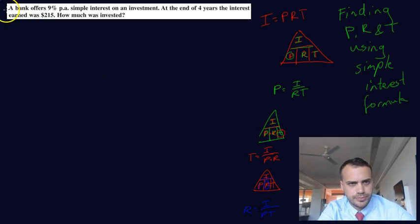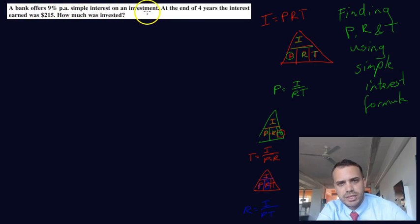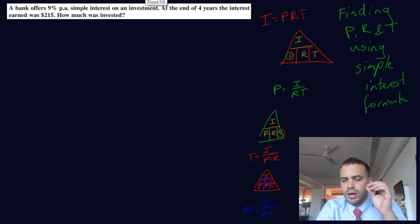Let's take a look at the question. A bank offers 9% per annum simple interest on an investment. At the end of four years, the interest earned was $215. How much was invested? I don't expect you to be able to read these questions that way. This is how you tackle them.